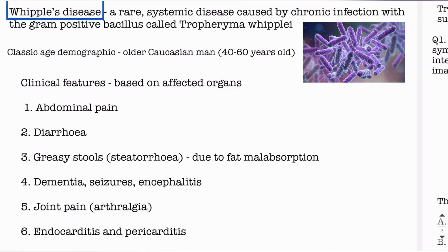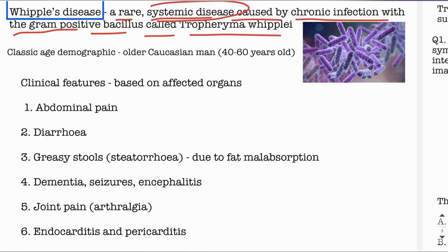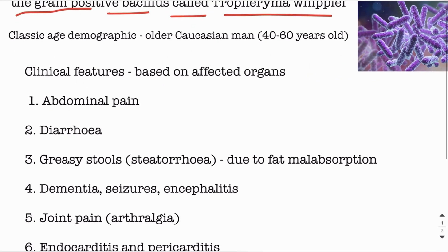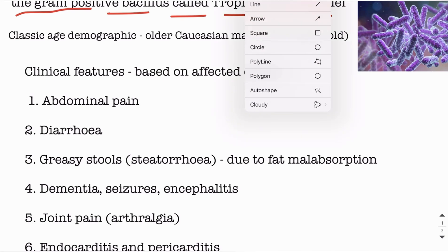Whipple's disease is defined as a rare systemic disease caused by chronic infection with the gram-positive bacillus called Tropheryma whipplei. This is a chronic, long-term infection caused by a gram-positive bacterium, and it is a systemic disease which means that it involves multiple organs.